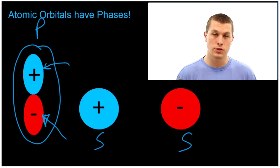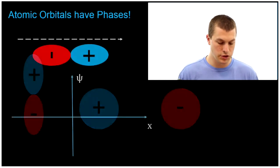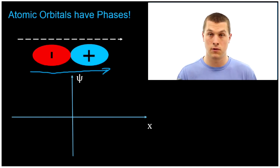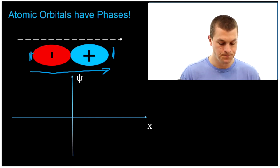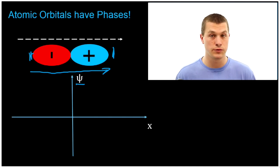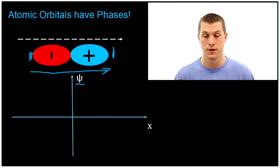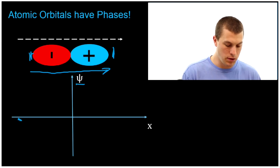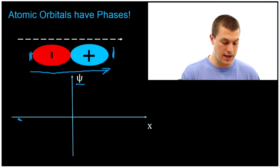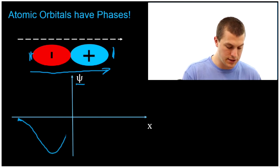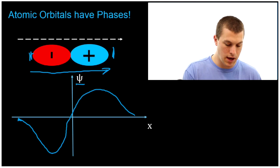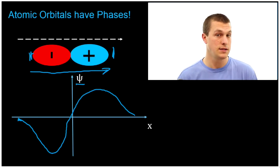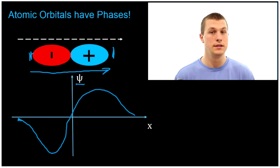Let's take a closer look at what this phase actually means. Here I have a p orbital, and I'm going to draw the intensity of the p orbital as I go from left to right. I've labeled the y-axis with psi, which is the symbol we use for wave functions, because atomic orbitals just are wave functions. When we start out on the left side of this p orbital, we're below the x-axis because it's a negative phase, and then we go positive on the other side. So our atomic orbitals have phases, meaning if they overlap positive and positive they'll constructively interfere, but if they overlap negative and positive they'll destructively interfere.